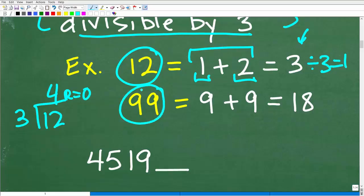Let's take another example. How about 99? Hopefully you would say, yeah, 99 is divisible by 3. But let's check this using the divisibility rule. We're going to take the sum of the digits, which is 9 plus 9. 9 plus 9 is 18. And now, again, is 18 divisible by 3? Yes, it is. The answer is 6, remainder 0.